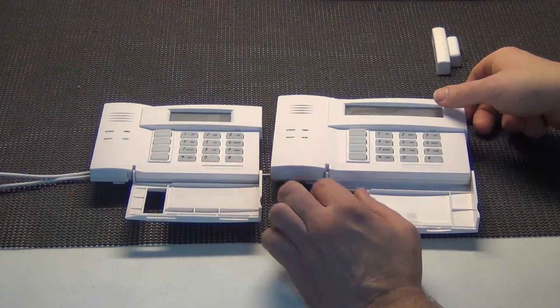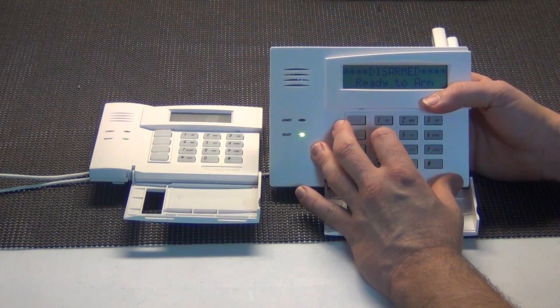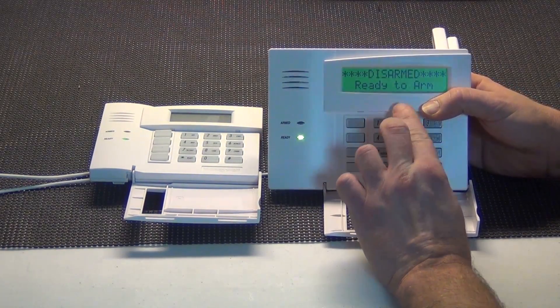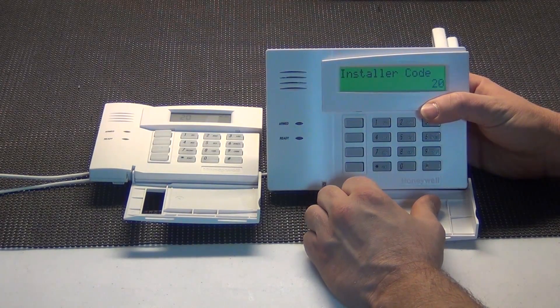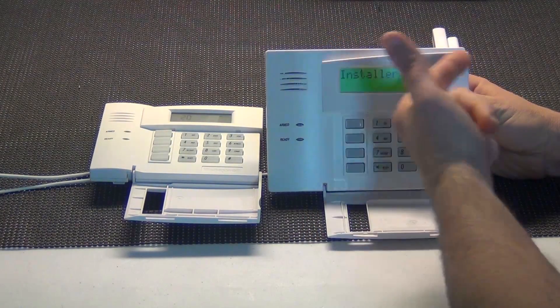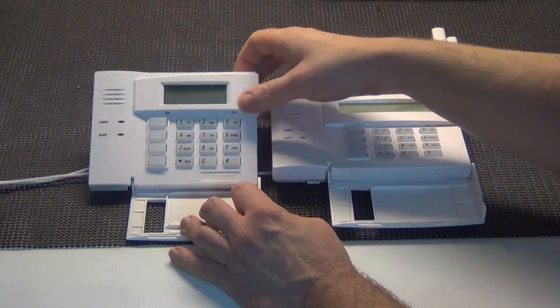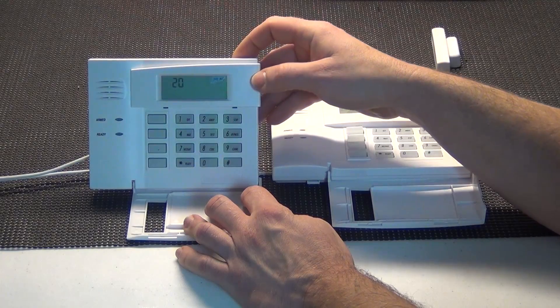Now I'm going to take you into programming here so you can see what it looks like on each keypad. You press your installer code and 800 to get in. And as you can see on the 6160, it says installer code 20. On the 6150, you're just going to get 20 and that's it.